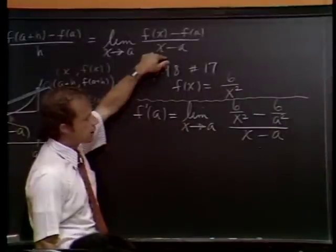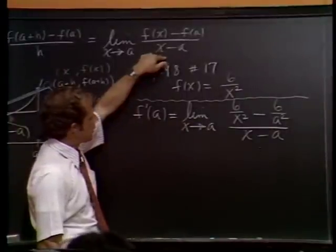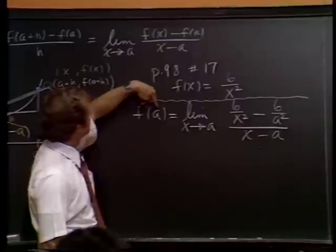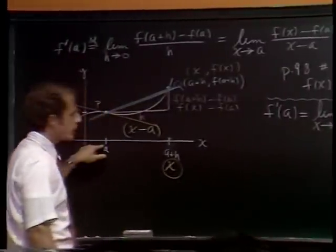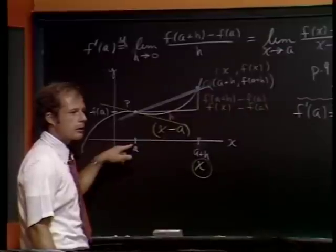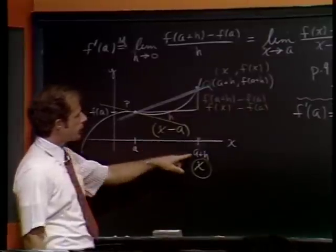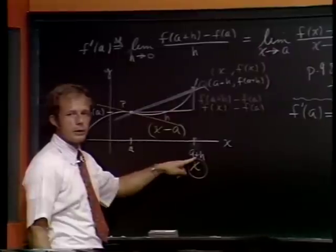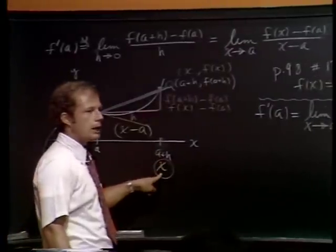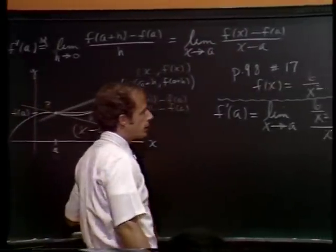This will be f prime of x. No, this will be f prime of a. Did I have x back here? No, this is still, this is a also. You see, we're holding a fixed. I'm going back to the book's notation. And either calling the variable points x coordinate a plus h, in our original definition that I've been working with, or just call it x. So that's the variable point now.